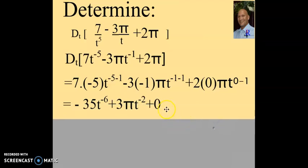So, negative 5 times 7 is negative 35, minus 5 minus 1 is minus 6, minus 3 multiplied with minus 1 is positive 3, then I have minus 1 minus 1 is minus 2.